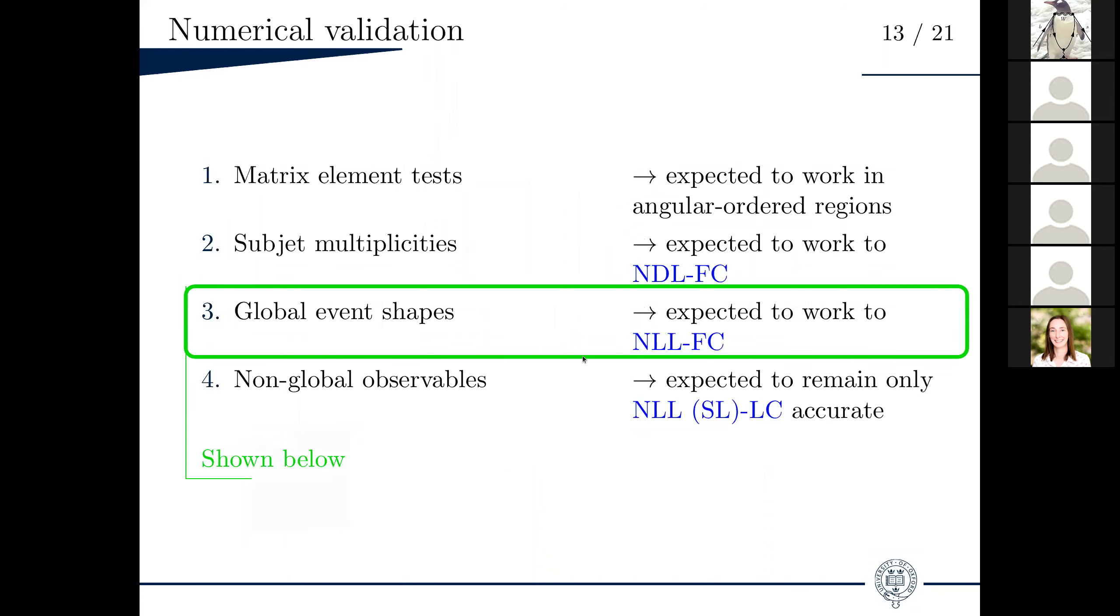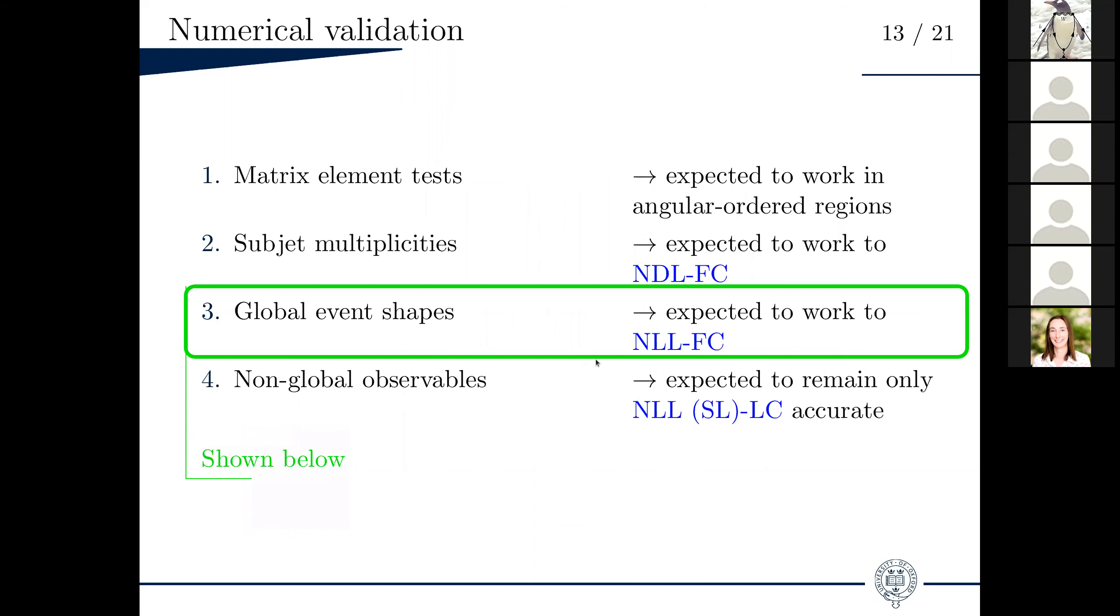For color, I am going to show you what happens if we look at global event shapes, for example, which are types of observables. The results are shown here. The only thing that you need to understand is that a green point at zero shows agreement with a certain shower for a certain observable at leading log and at full color. So typically with this naive method of assigning color factors, the CFFE method, you see that for all showers, you have certain observables which are not reproduced correctly at full color for a certain combination of shower and observable. What happens if we enable our segment method now in the showers and the result is obvious. Every point is green for all the observables that we looked at, for example, all showers agree at full color at leading log.